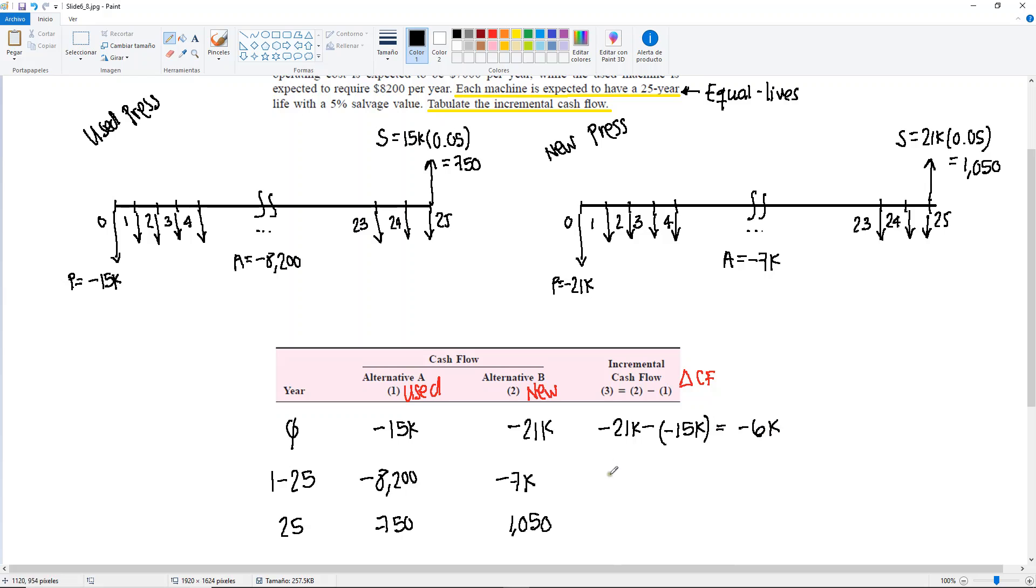Then the next one, minus 7,000 minus minus 8,200. This is going to give us actually positive 1,200. And then the last one's easy. 1,050 minus 750, giving us 300.